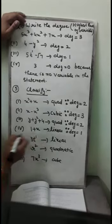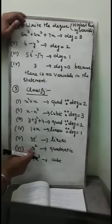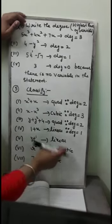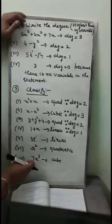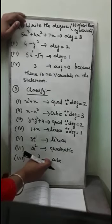In the sixth part, r squared — the highest power is 2, so it is quadratic. In the last part, 7x cubed — the highest power of the variable is 3, so it is cubic.